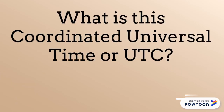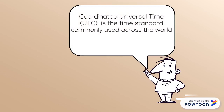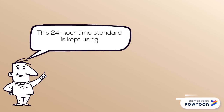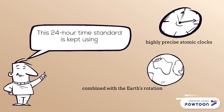Your Geography Minute. What is Coordinated Universal Time, or UTC? Coordinated Universal Time is the time standard commonly used across the world. It is not a time zone. This 24-hour time standard is kept using highly precise atomic clocks combined with the Earth's rotation.